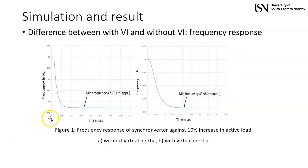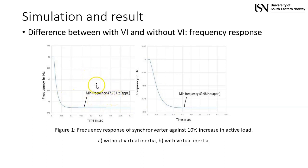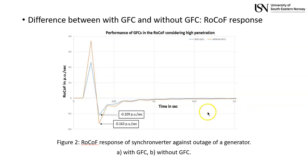This is the simulation result. It shows how frequency deterioration is affected by virtual inertia. The first graph shows the frequency drops to 47.73 Hz during the absence of virtual inertia. During the presence of virtual inertia, the frequency drops to only 49.98 Hz. This graph demonstrates a maximum RoCoF of 0.163 per unit per second recorded without a grid-forming converter, compared to 0.109 per unit per second with a grid-forming converter.